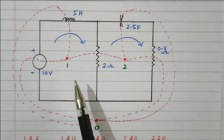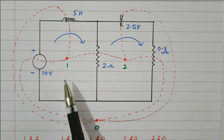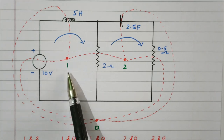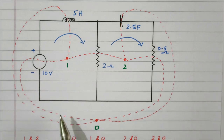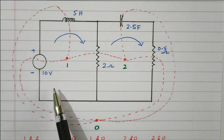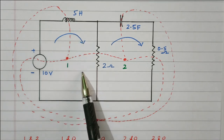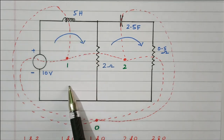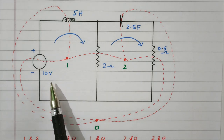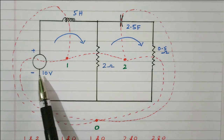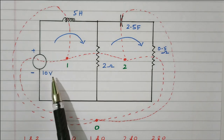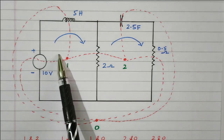Now we will connect dot 1 and 0. Between 1 and 0, two elements are available — one is a voltage source and another one is an inductance. Draw the dotted line between 1 and 0 through the voltage source. This voltage source will be converted into a current source of 10 amperes. The direction is determined by the current flow — current is flowing clockwise, from negative to positive, meaning a rise in potential. So the current source is going in the upward direction.